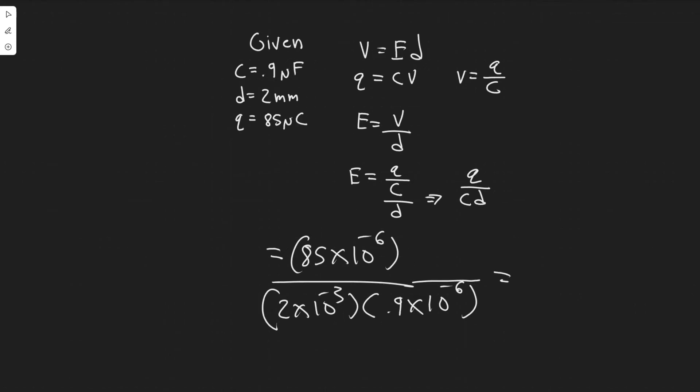So just going ahead and plugging this in, 85 times 10 to the minus six. And then you're going to want to divide by 2 times 10 to the minus three. And once again, divide by 0.9 times 10 to the minus six. So you're going to get a pretty big number, 47222.22, and so on.